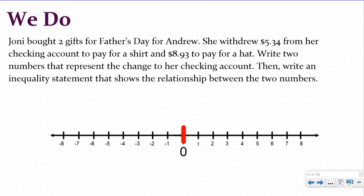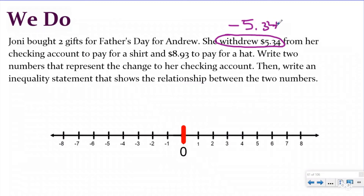Let's do a We Do problem. It says Joni bought two gifts for Father's Day for Andrew. She withdrew $5.34 from her checking account to pay for a shirt and $8.93 to pay for a hat. Write two numbers that represent the change to her checking account, then write an inequality statement that shows the relationship between the two numbers. If she withdrew $5.34, that means she's taking out of her bank account, so this is going to be negative $5.34. In the same thought, if she's taking $8.93 out of her checking account to pay for a hat, this is also going to be represented with negative $8.93. Both of these are debits to her checking account, which means she's taking money out.